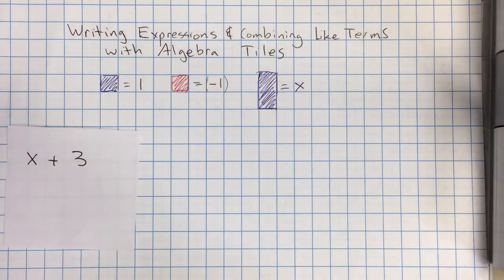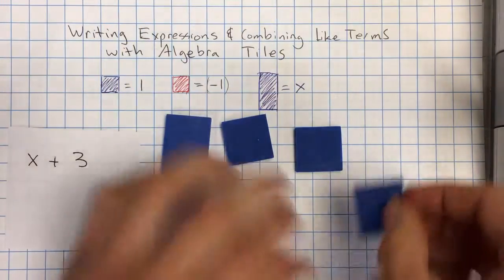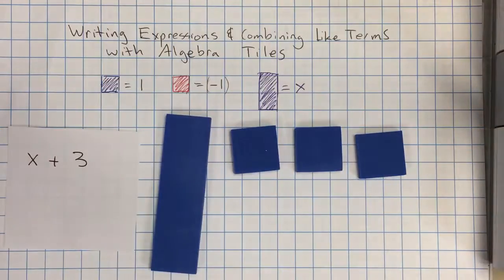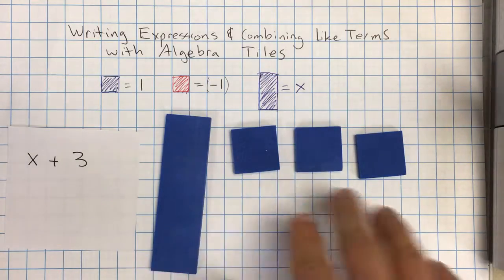So if I had x plus 3, I'm going to take 1x. I'm going to put down 1, 2, 3 blue tiles. This shows us x plus 3. We can't really do anything else with it, but if we had to show x plus 3, that would be good. When we start solving equations, you have to know how to set this up. So this is x plus 3.